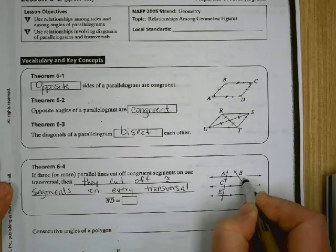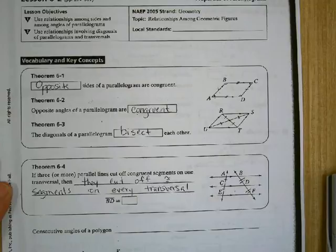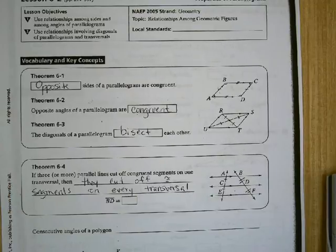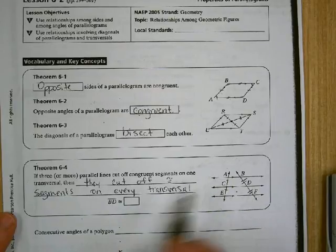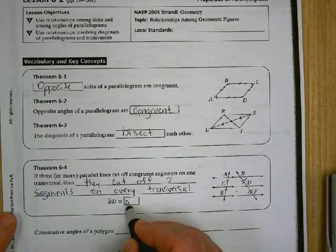Then they cut off congruent segments on every transversal. So you can mark those two congruent as well. Now, they are not the same size as these. They're just congruent to each other. So BD is congruent to DF.